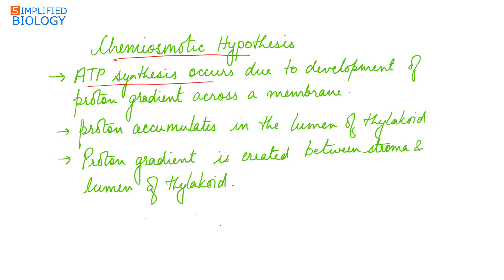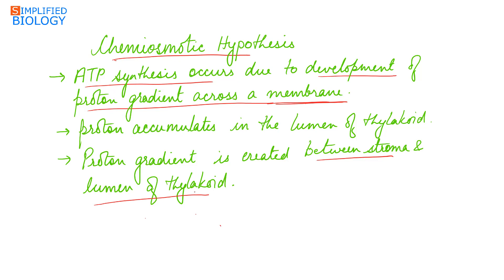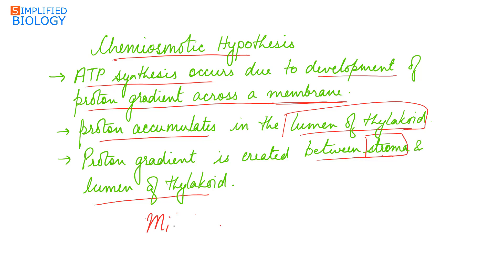ATP synthesis occurs due to development of a proton gradient across the thylakoid membrane. A proton gradient is created between the stroma and the lumen of the thylakoid during non-cyclic and cyclic photophosphorylation. Protons accumulate in the lumen, so the stroma has fewer protons compared to the lumen. This is referred to as Mitchell's chemiosmotic hypothesis for ATP formation.